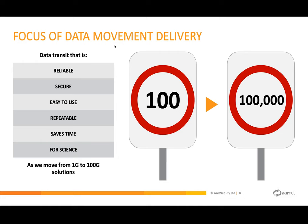As our networks and instrumental data increase, we're moving from 10 meg, 100 meg, a gig, up to 100 gig. We're slowly seeing data rates having to increase with the types of instruments we're deploying. With that, we still want reliability, security, ease of use, and repeatability. It has to save you time and not be a barrier. Our user cases are always focused on science — not how to move movies or Netflix, but how to move science data and make that easier and repeatable.